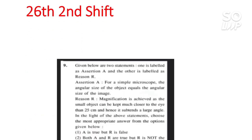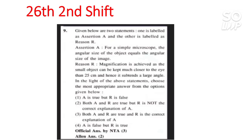For 26th second shift, there is only one error question — an assertion-reasoning type question where NTA says option 3 is correct but Allen says it is option 2. That covers all the error questions and mistakes in the answer key. If you find any other question with a wrong answer key or wrong problem statement, please comment below or message me on Instagram so I can tell you whether to claim or expect bonus marks. Thanks, and share this video with your friends.